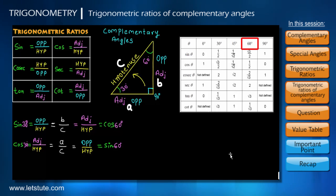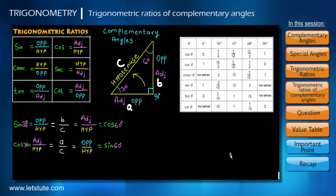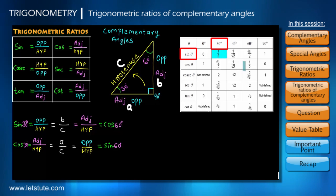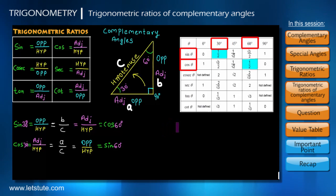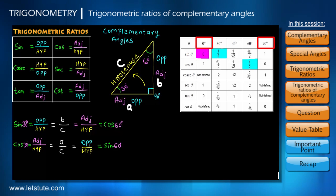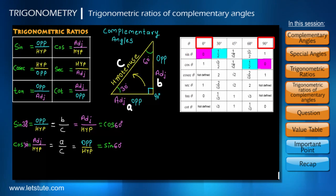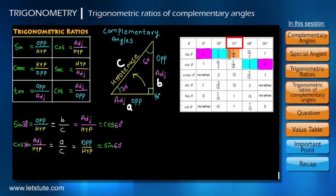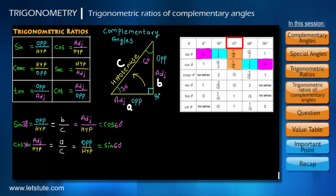The specific angles are 0, 30, 45, 60, and 90, which we frequently use in trigonometry. Looking at the table, the value of sin 30 is 1/2, and therefore cos 60 is also equal to 1/2. Since 0 and 90 are complementary angles, the value of sin 0 is the same as cos 90, which equals 0. Similarly, the value of sin 45 is the same as cos 45, equal to 1 upon root 2, and so on.